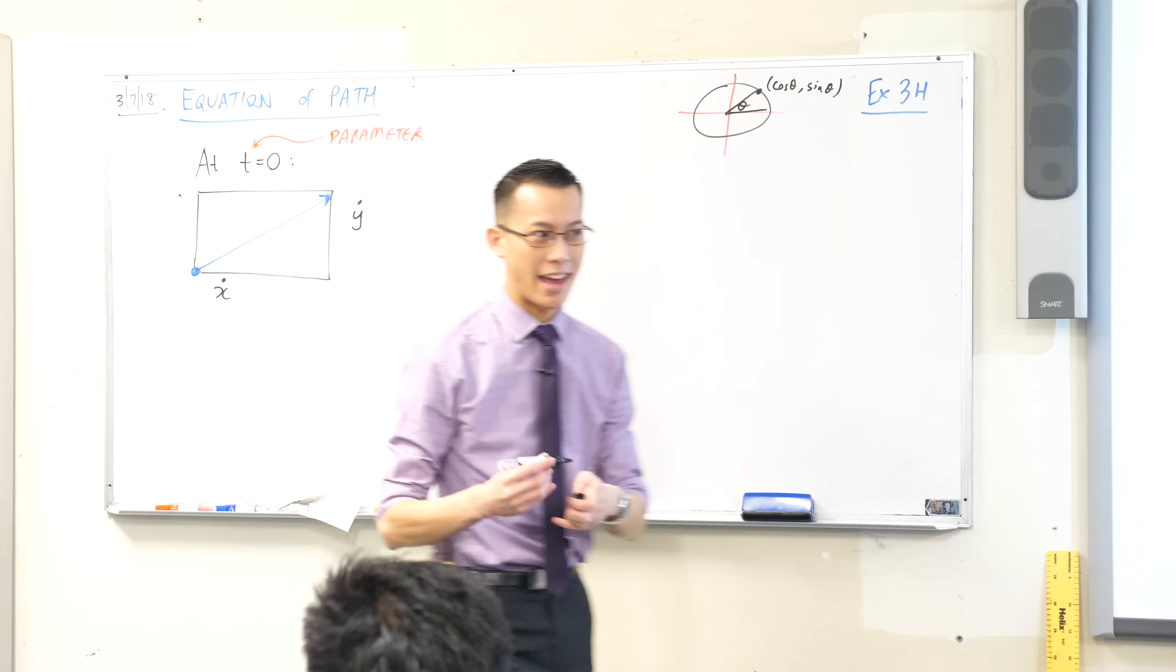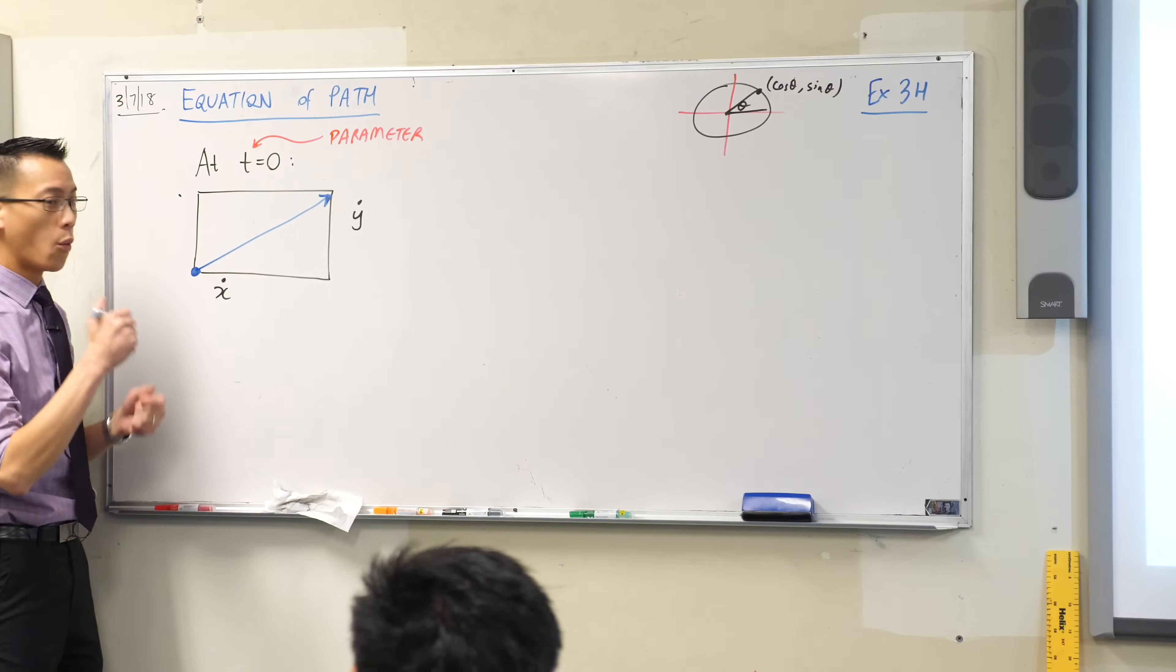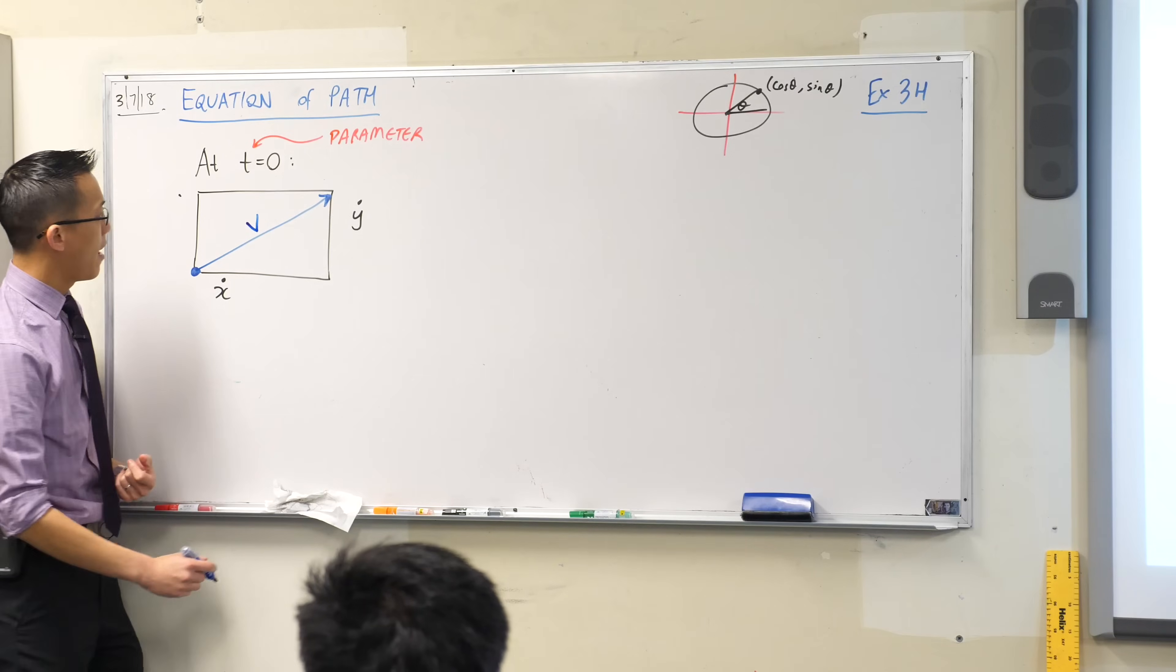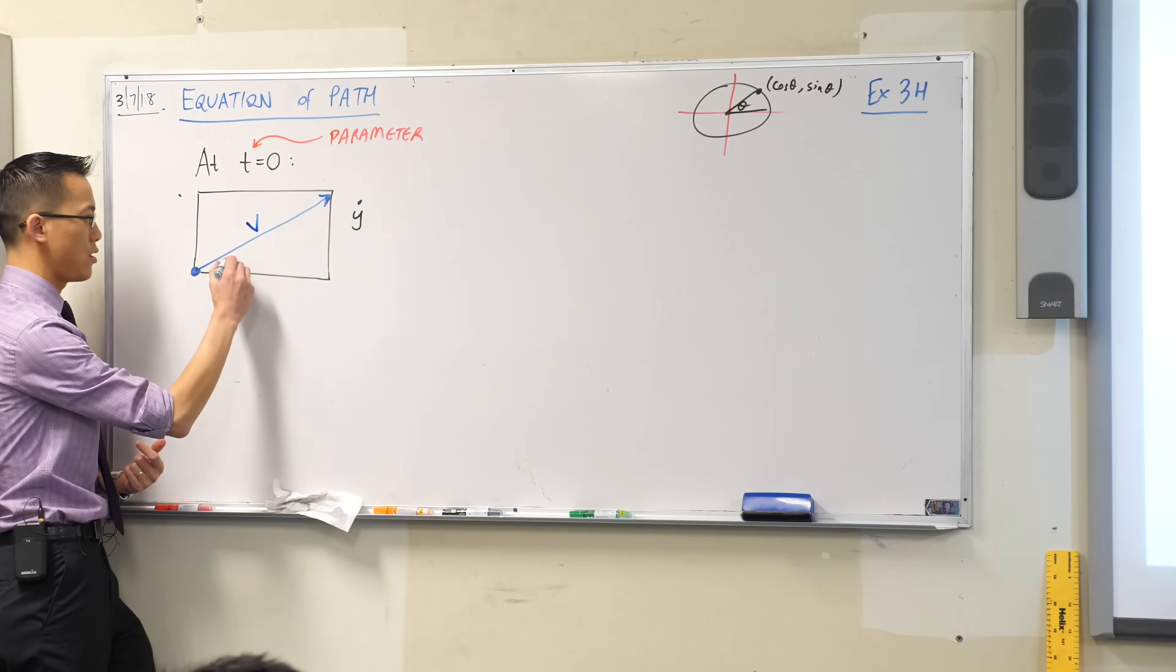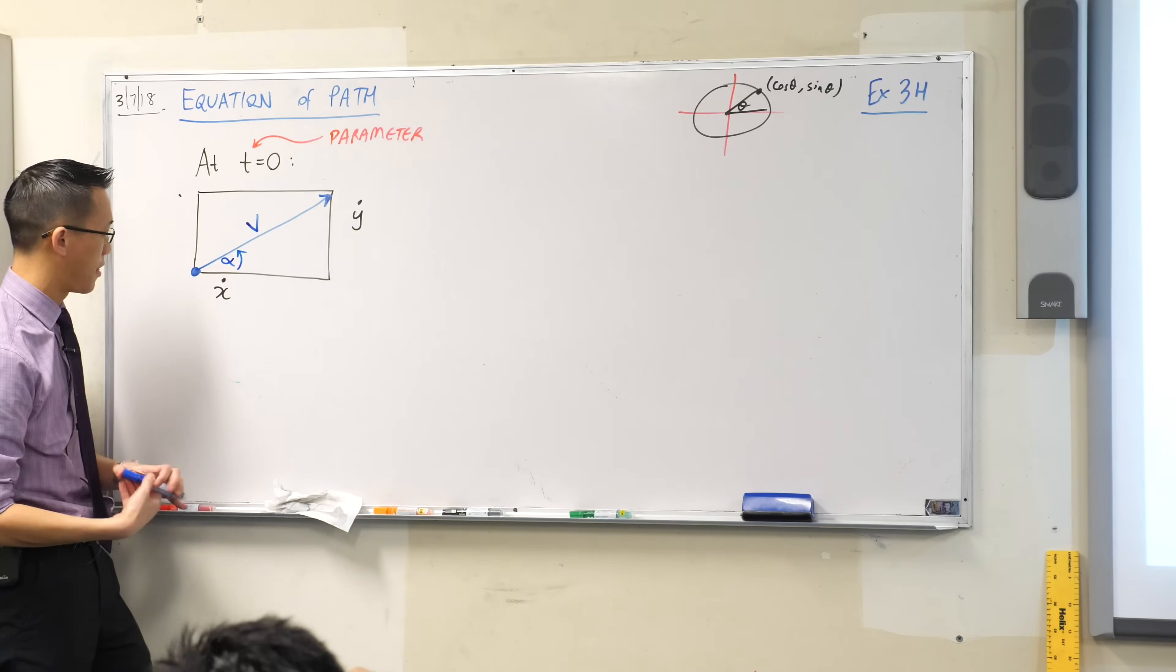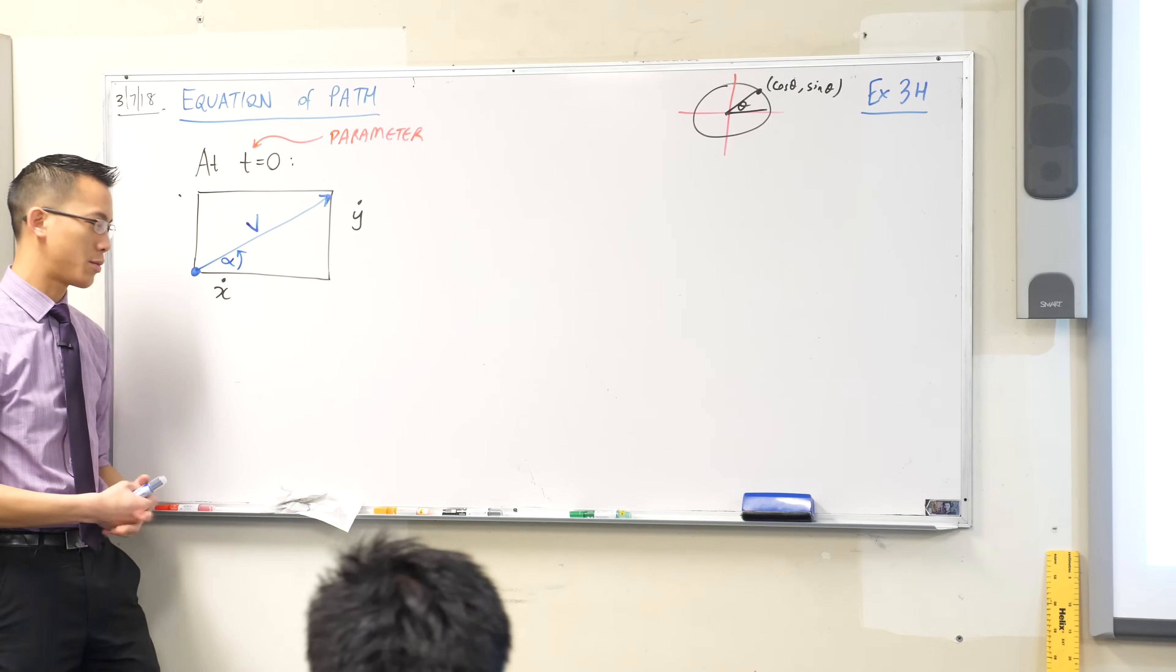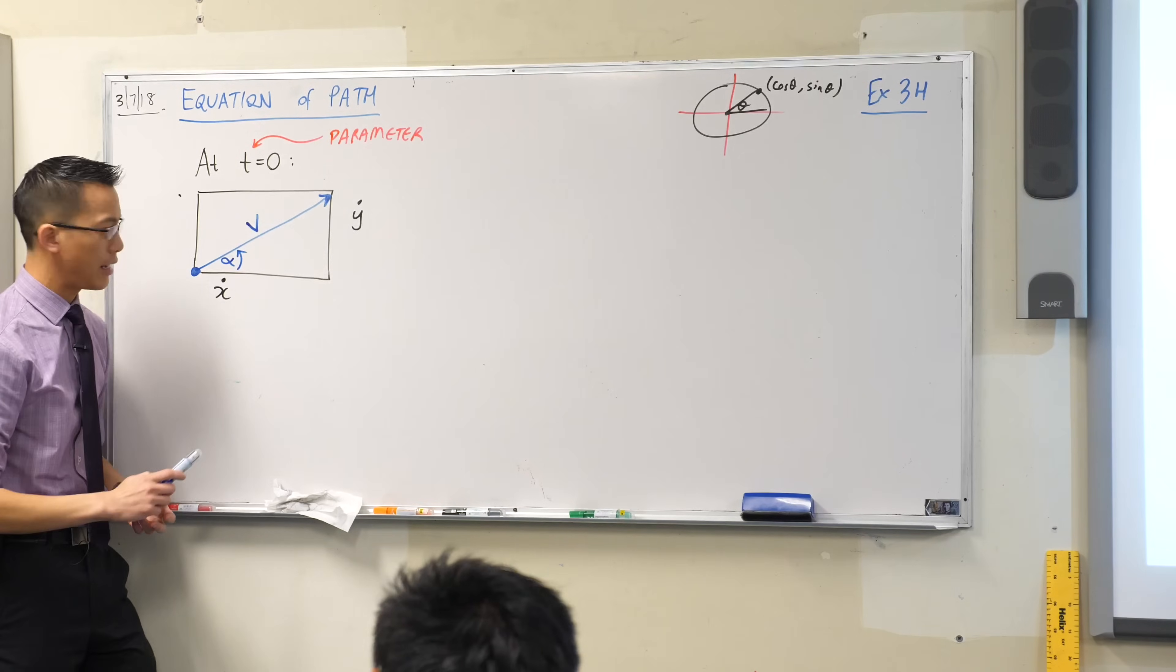So at time zero, okay, I want you to think about what we normally know about a projectile motion situation, okay? We normally get given how fast it's going, so let's call it v, our initial speed. And then we also get given an angle of projection, right? So you've got alpha, like so. By the way, we call it alpha rather than theta because it's your angle of projection, this is where you begin, right? So alpha, you know, the first letter of the Greek alphabet, that's why it is what it is, okay?